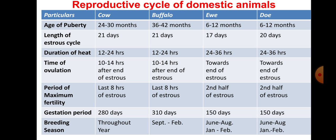Duration of heat: cow and buffalo 12 to 14 hours; ewe and doe 24 to 36 hours. Time of ovulation - meaning formation of ovum: cow and buffalo 10 to 14 hours after the end of oestrus; ewe and doe also after end of oestrus. Period of maximum fertility: last 8 hours of oestrus for cow and buffalo; second half of oestrus for ewe and doe. Gestation period - the time from pregnancy to delivery: cow 280 days, buffalo 310 days.